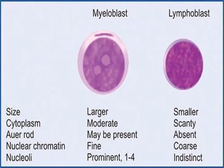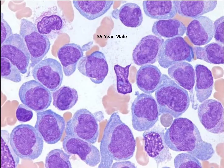In this slide, two types of blasts are shown: myeloblasts and lymphoblasts. We have to know the difference between both to differentiate myeloid from lymphoid leukemia. In myeloblasts, the size is larger, cytoplasm is moderate, nuclear chromatin is fine, and one to two prominent nucleoli are seen. In lymphoblasts, the size is somewhat smaller, cytoplasm is scanty, and the nuclear chromatin is coarse with indistinct or absent nucleoli.